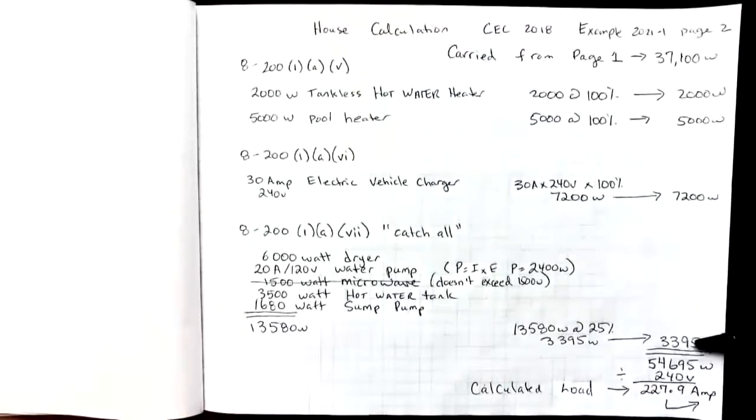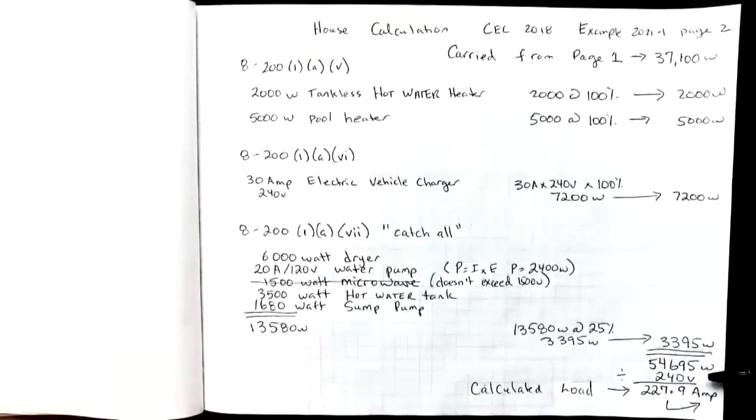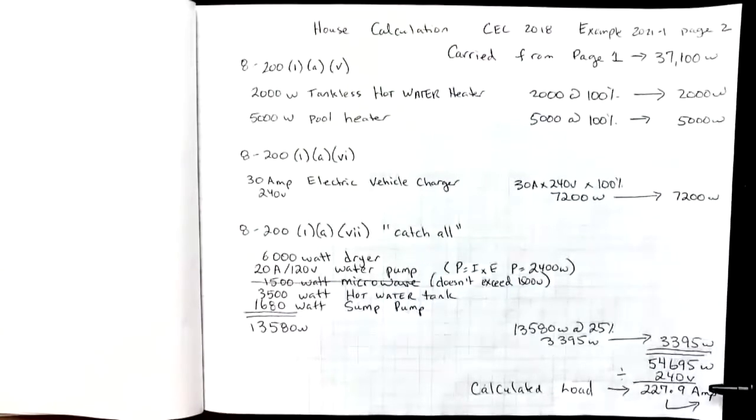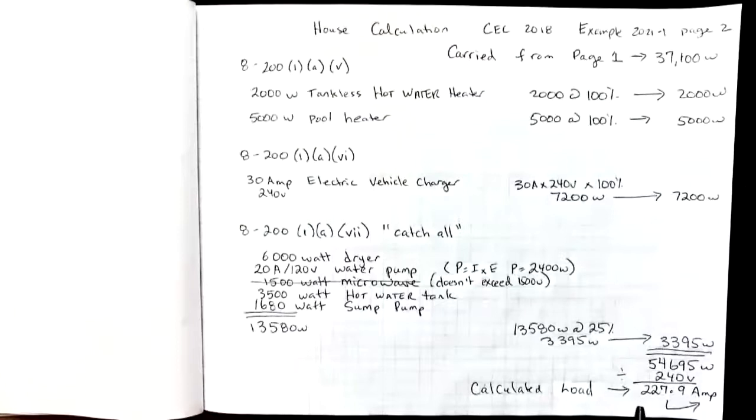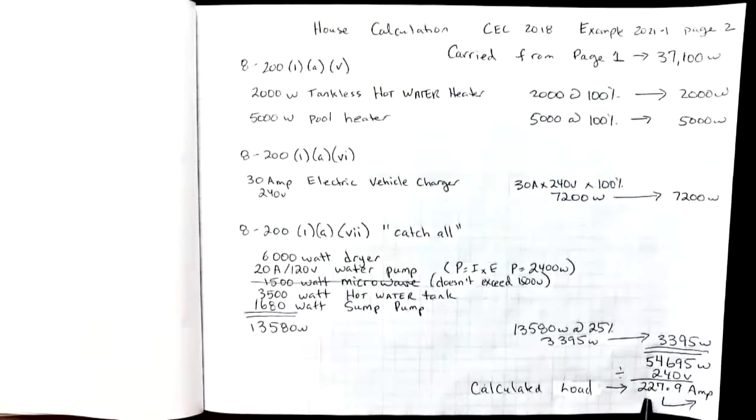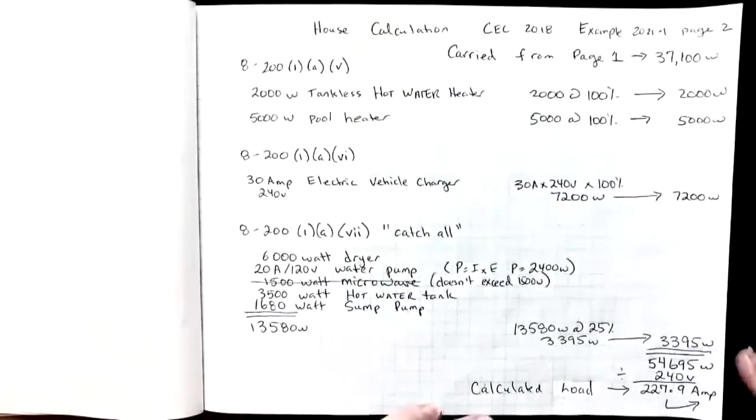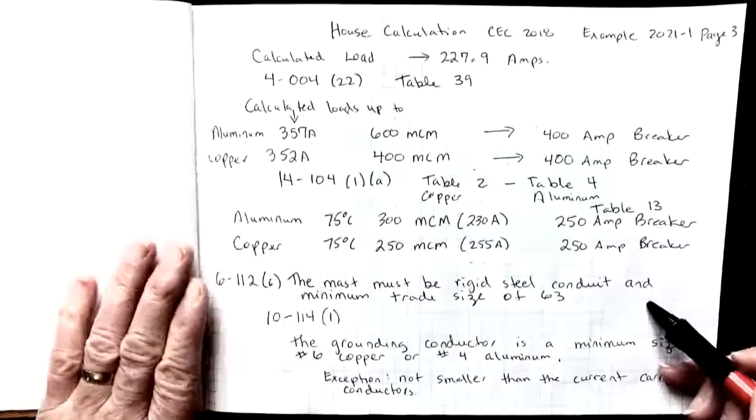I add all of these up, including the previous page which was carried forward here, gives me 54,695 watts. The typical home in Canada is fed with 240 volts, so I divide that wattage by 240 volts. And my calculated load then is 227.9 amps. I'm going to carry that forward to the next page so we can look for the wire and the breaker.